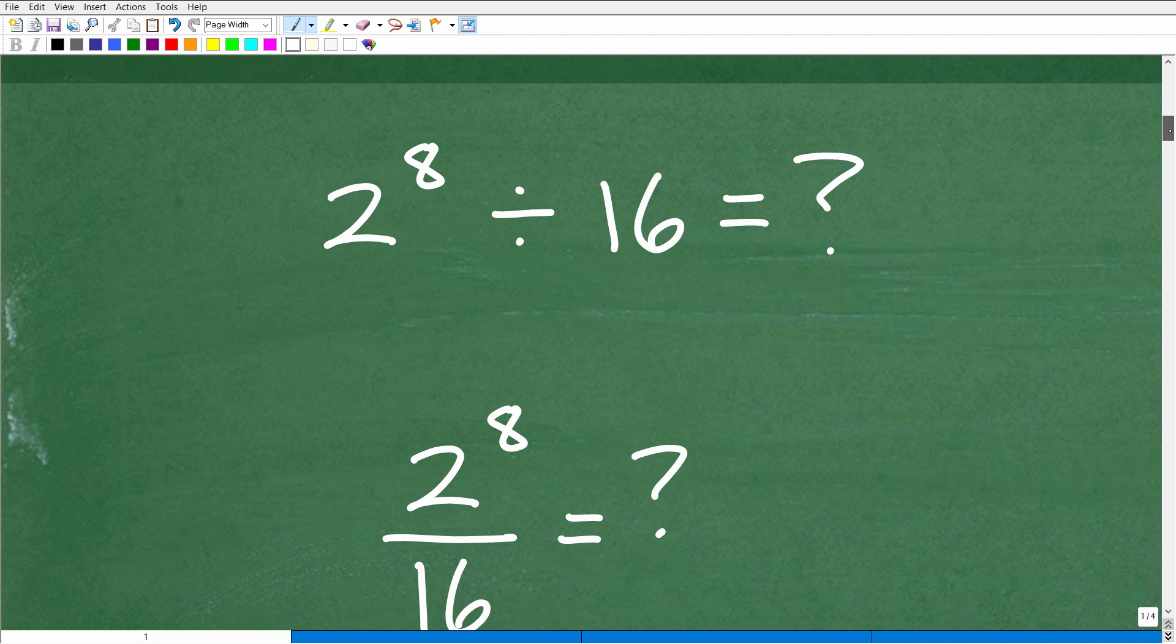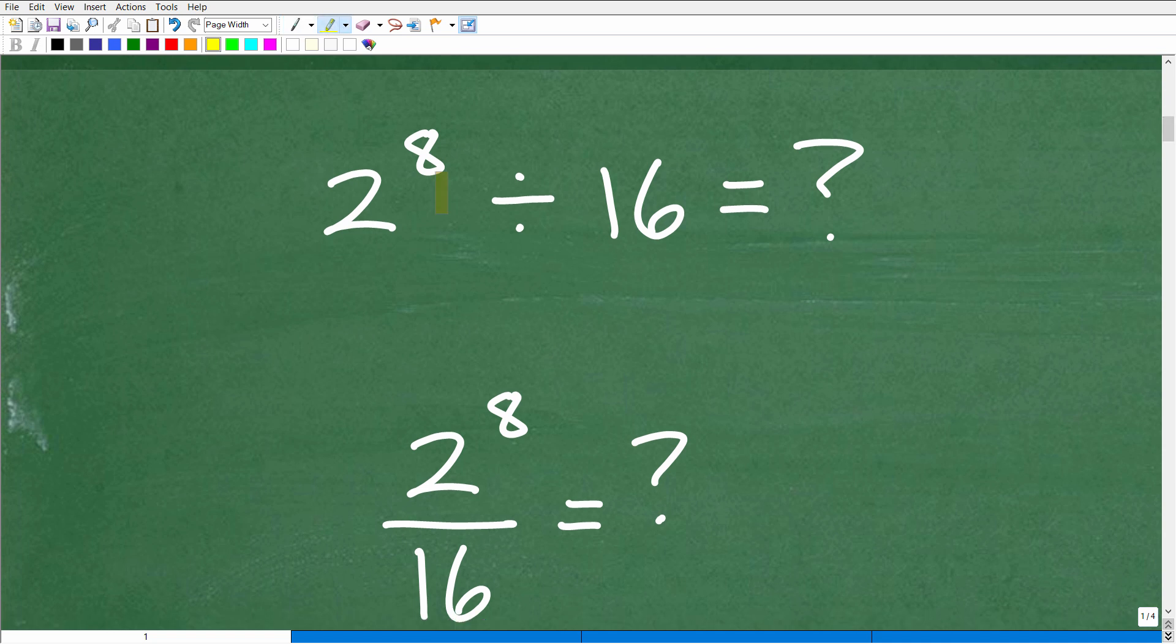All right, so the first thing that we want to recognize is we have 2 to the 8th divided by 16. Now, of course, this is a division problem, but this is also a fraction problem. Fractions are, in fact, division problems, if you will, because we're taking a numerator and we're dividing it by a denominator. So what we want to do, and you don't have to do it this way, but I'm going to suggest that you do, is rewrite division problems or be able to think of division problems as fractions.